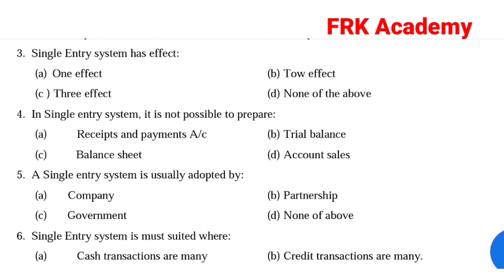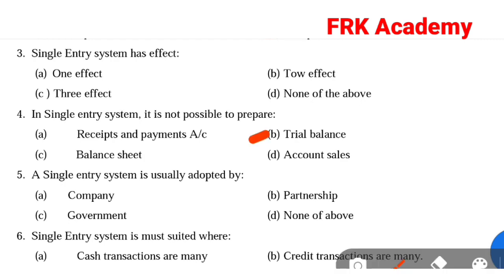In a single entry system, it is not possible to prepare. Option A: receipt and payment account. Option B: trial balance. Option C: balance sheet. Option D: account sales. Answer: Option B, trial balance.